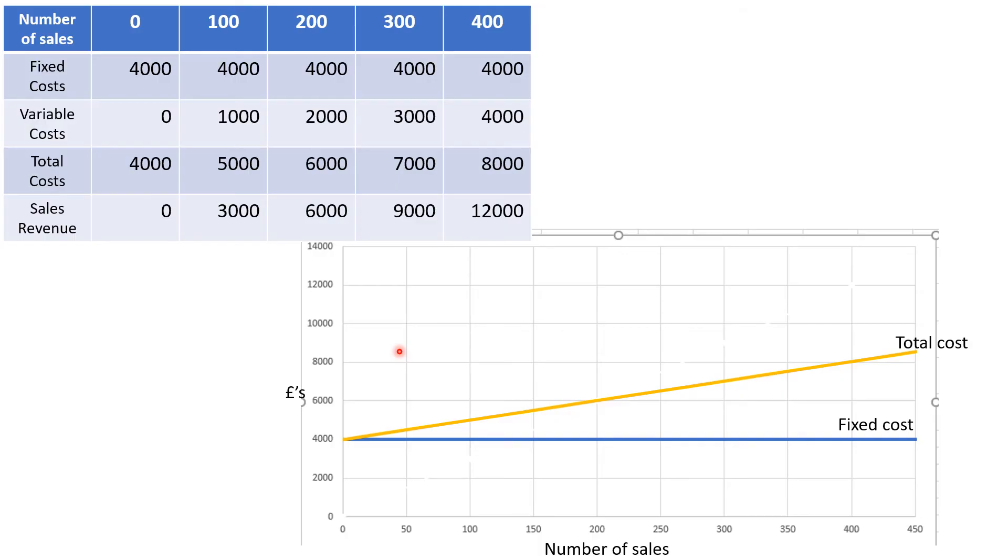And again, I'm going to look if I sell 400, I get £12,000. So if I go to 400, I'll put my point there and I will simply just join up those two lines like this and I have my sales revenue line on.